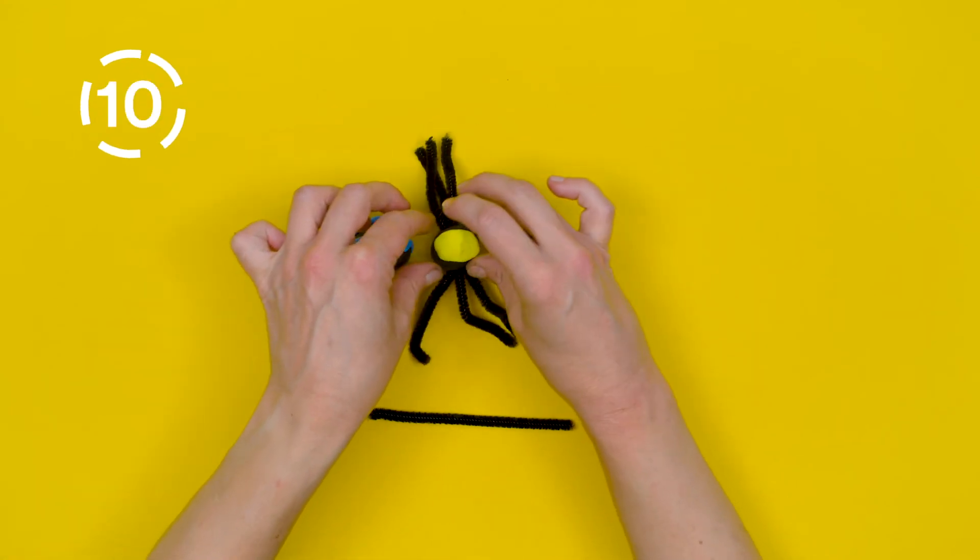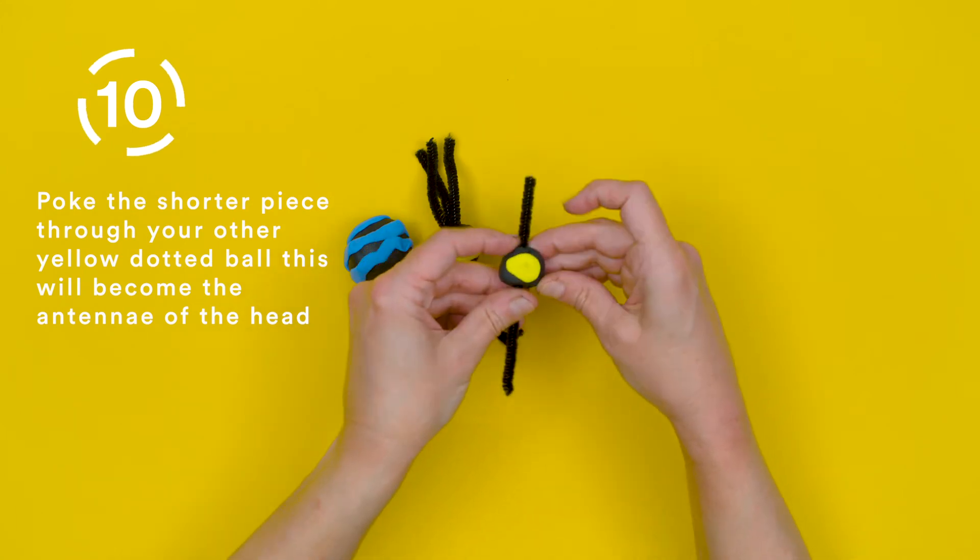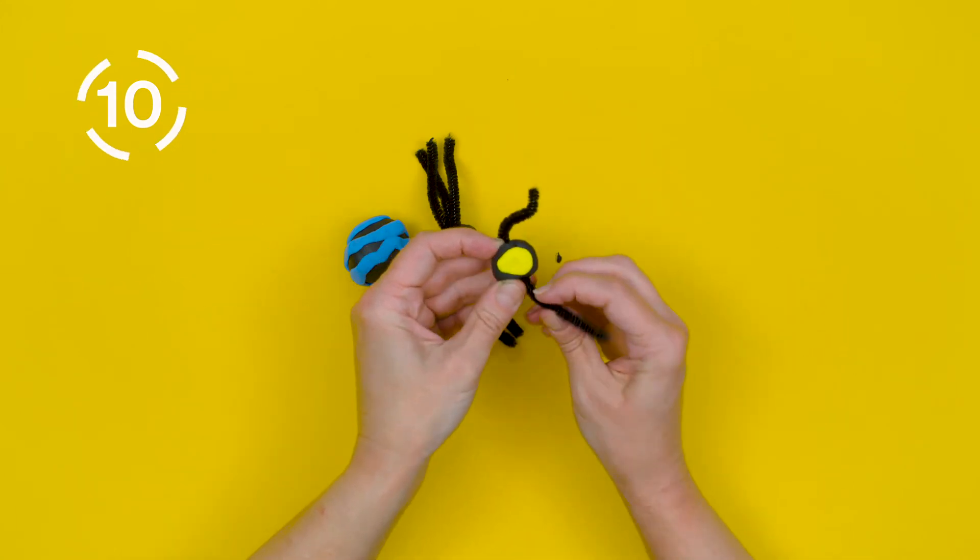Step 10. Poke the shorter piece through your other yellow dotted ball. This will become the antennae of the head.